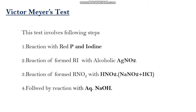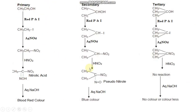If we get a blood red color solution, then we can understand that the alcohol is a primary alcohol. If we get a blue coloration, then it is a secondary alcohol. If the solution is colorless, then the original alcohol is tertiary. The chemistry involved in the test is summarized in the form of equations, showing how primary, secondary and tertiary alcohols react with Victor Meyer's reagents.